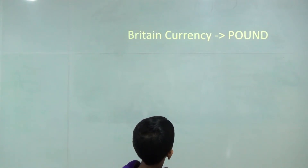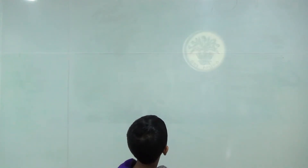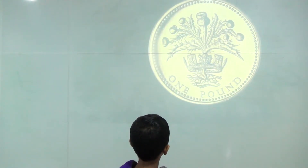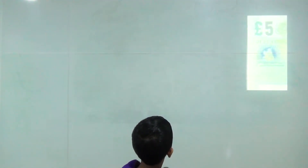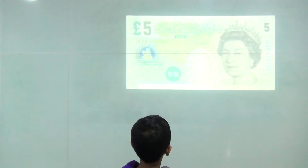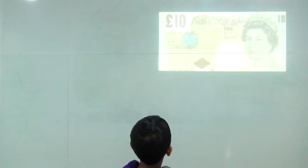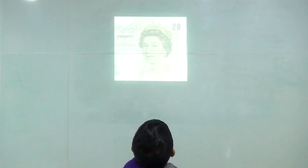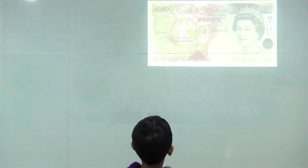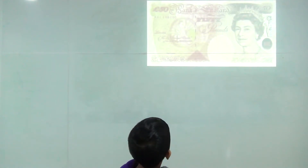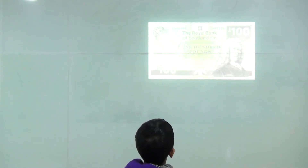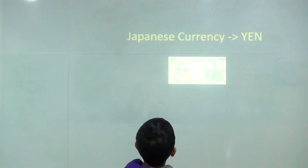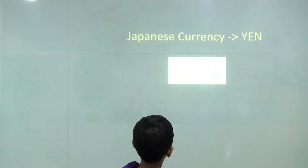Britain's currency: pound. 1 pound, 5 pound, 10 pound, 20 pound, 50 pound, 100 pound, 1,000 pound.